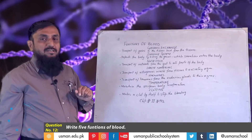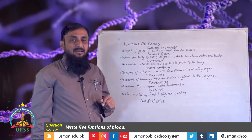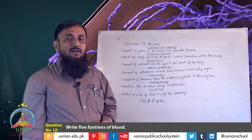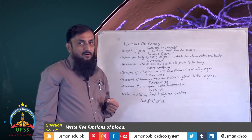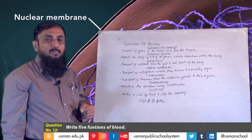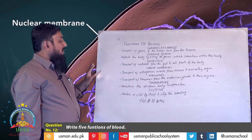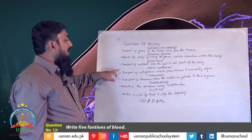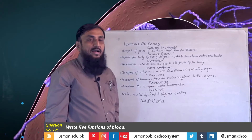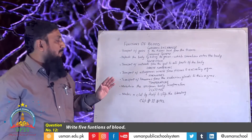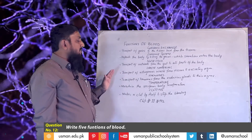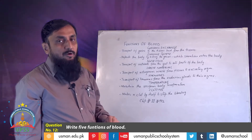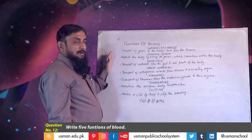When we eat something, waste material is produced. Carbon dioxide and other waste products from all parts of the body are transported through the blood. Blood transports nitrogenous waste from tissues to excretory organs. So another function of blood is the removal of waste material from the body.